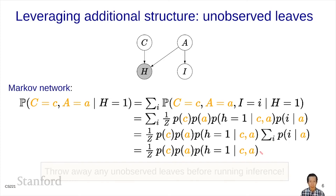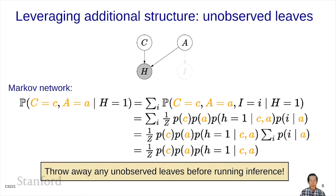This is the general idea: you can throw away any unobserved leaf nodes before running inference. This is very powerful because it connects marginalization over variables — which is generally a hard algebraic operation — with removal, which is a simple graph operation. In general, marginalization is hard, but when variables are unobserved leaves of a Bayesian network, it is trivial: you just remove them.